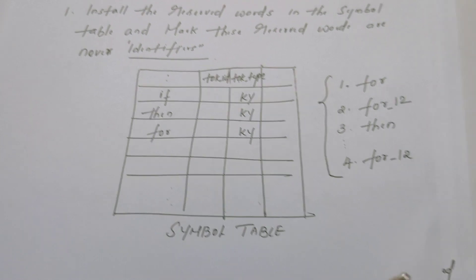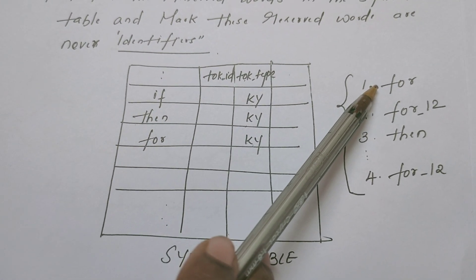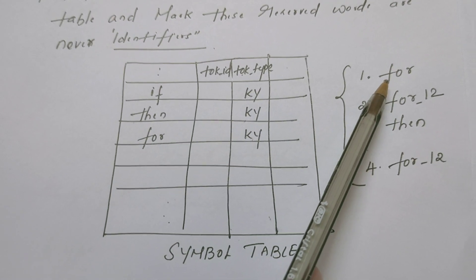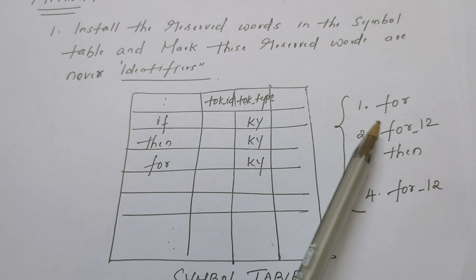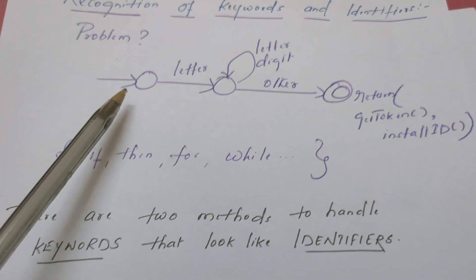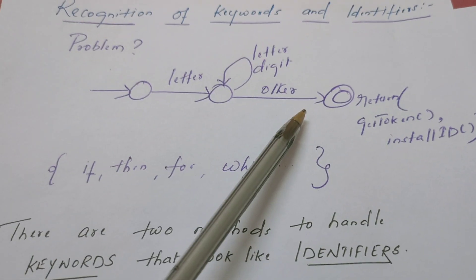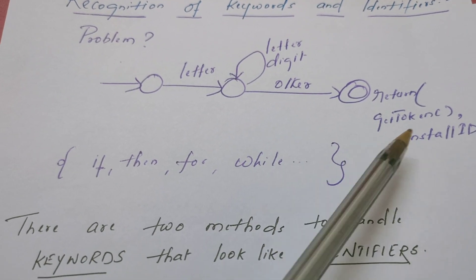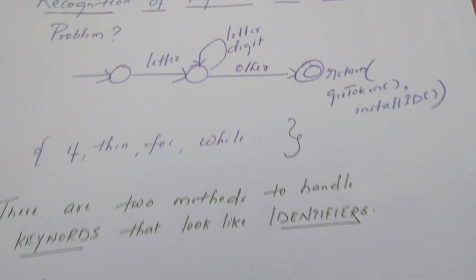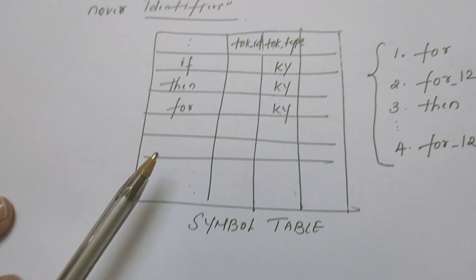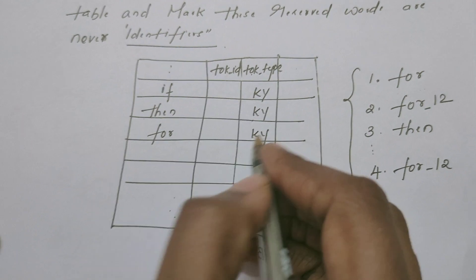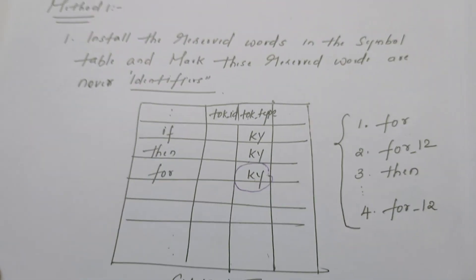Now, what is happening? Suppose the lexical analyzer comes across the lexeme F-O-R. This is recognized by the transition diagram. Two actions take place: it tries to install FOR into the symbol table. But FOR is already there, and its token type is keyword.